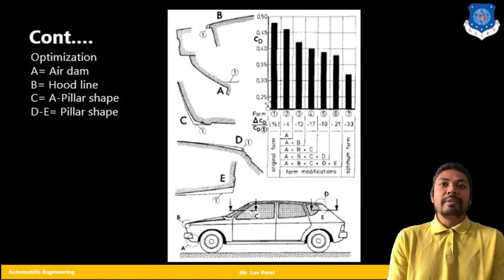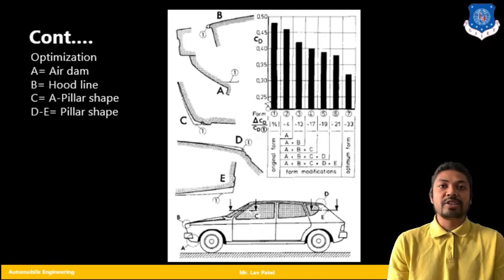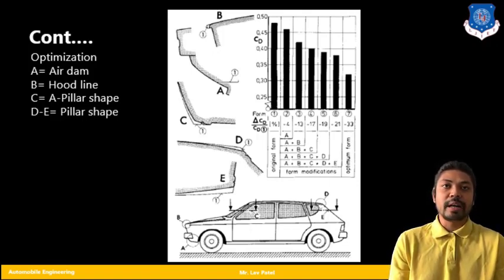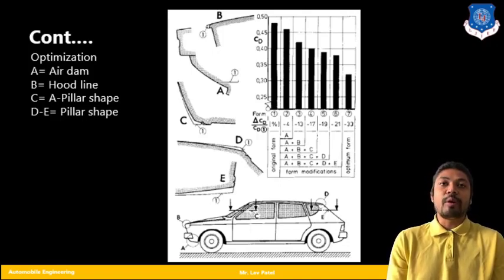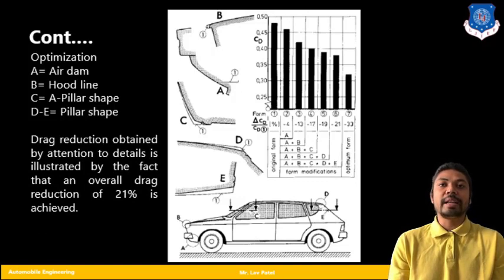So ultimately what we are going to do, we are going to reduce or change the design of individual components. After changing the design, how the drag values are going to affect, that we have to see. So here you can see several areas like A, B, C, D and E - air dam, hood line, pillar shapes, top portion of the car, rear portion of the car. So ultimately if I am going to change or modify the design of A or we can say the smoothness or the roundness, that can affect drag components. So by changing these values of A, B, C and D, almost we can get 21% or 33% amount of drag that we can reduce.